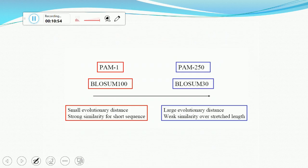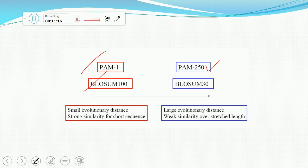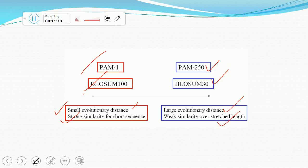PAM and BLOSUM matrices are inversely related. PAM 1 does the same function as BLOSUM 100, and PAM 250 does the same as BLOSUM 30. Decreasing PAM values or increasing BLOSUM values are used for small evolutionary distances and strong similarity for short sequences. PAM 250 and BLOSUM 30 are used when working with large evolutionary distances and weak similarity over stretched or relaxed alignments.